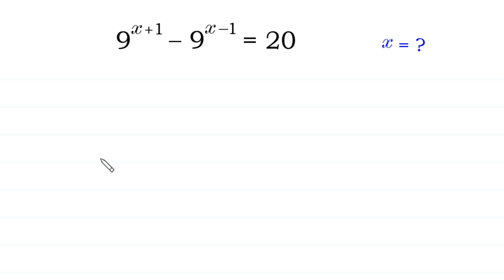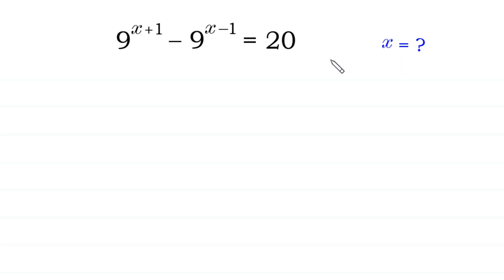Hello, welcome to how to solve this exponential equation: 9 to the power x plus 1 minus 9 to the power x minus 1 is equal to 20, and we need to find the value of x.